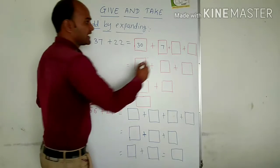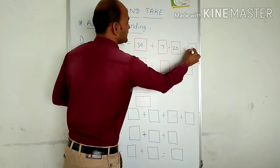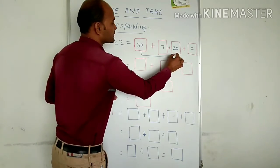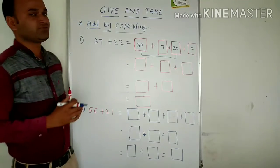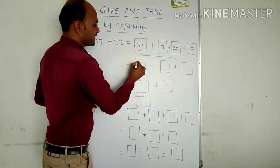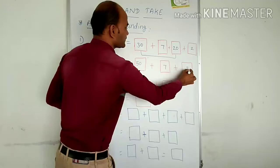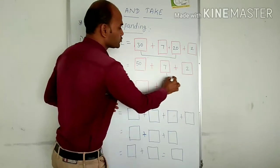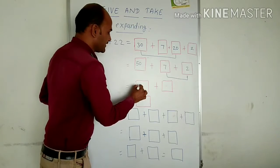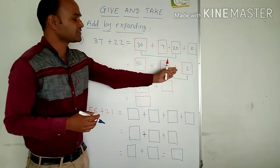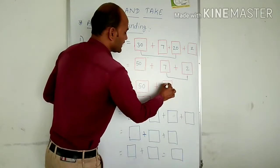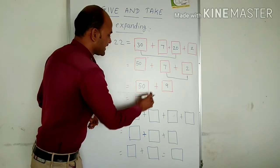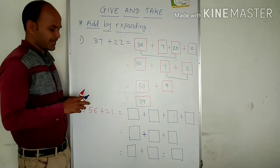So 22 is split into 20 plus 2. Now, we add the tens place numbers first: 30 plus 20 equals 50. We write the ones digits as usual. Then we add the ones place: 7 plus 2 equals 9. So 50 plus 9 gives us the answer 59. In this way we find the answer by expanding the numbers.